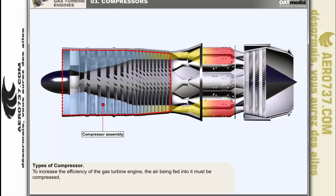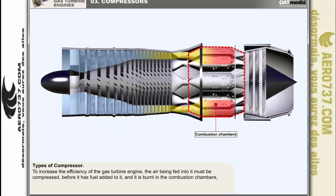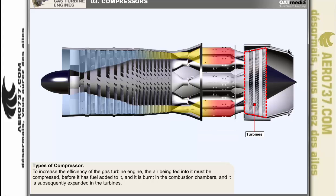To increase the efficiency of the gas turbine engine, the air being fed into it must be compressed before it has fuel added to it and it's burnt in the combustion chambers, and it's subsequently expanded in the turbines.